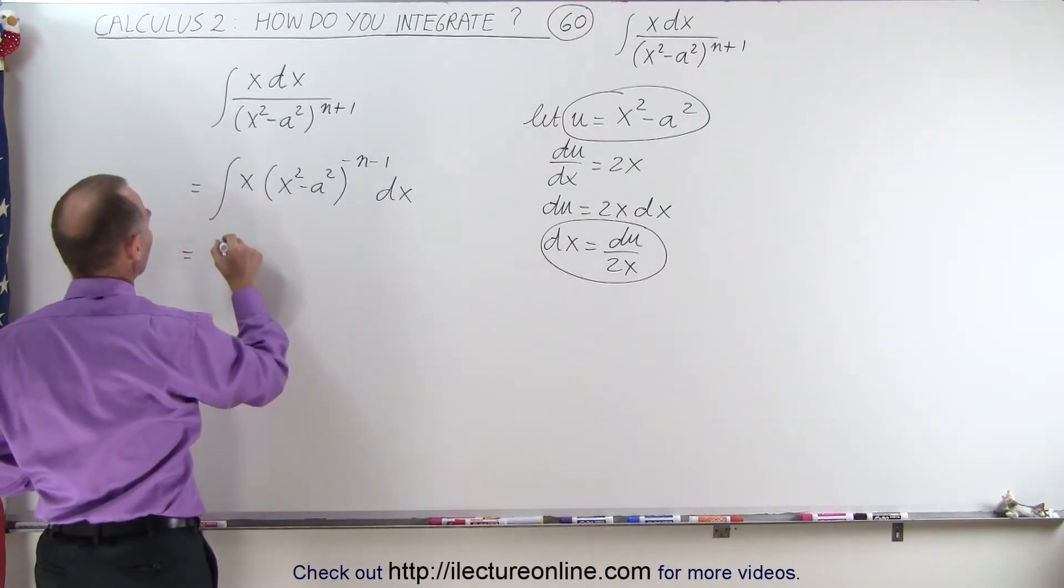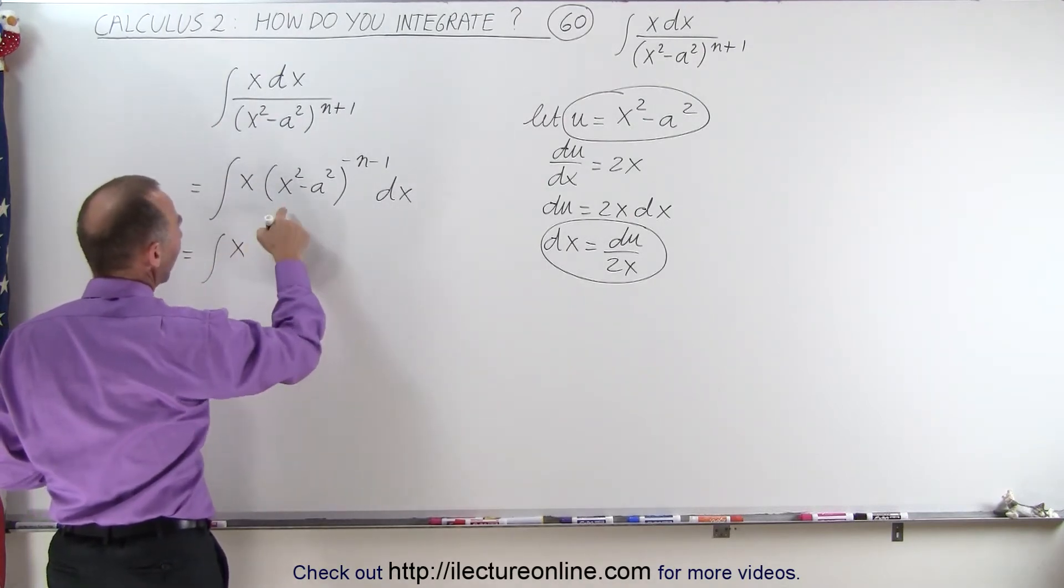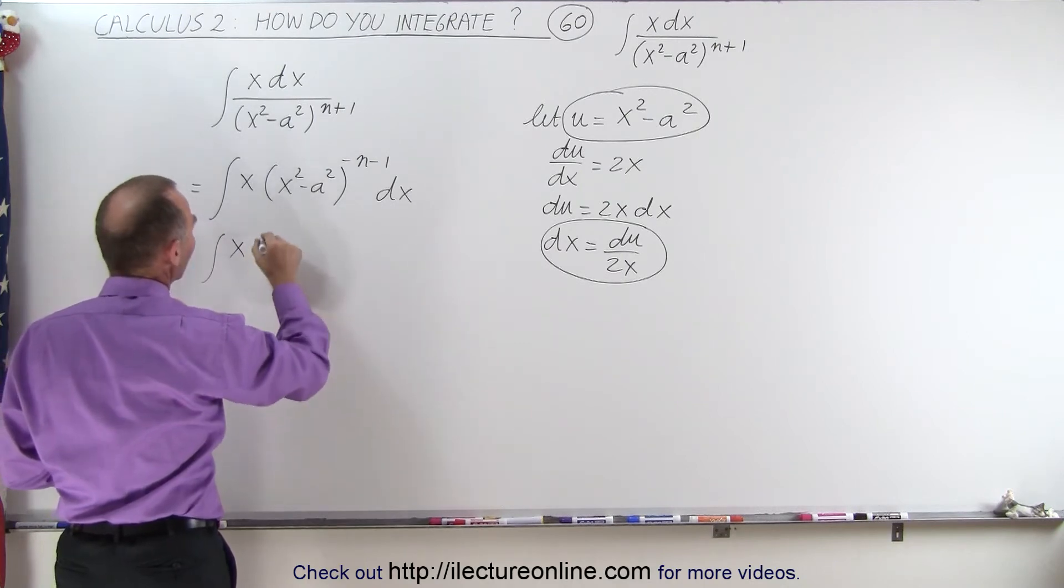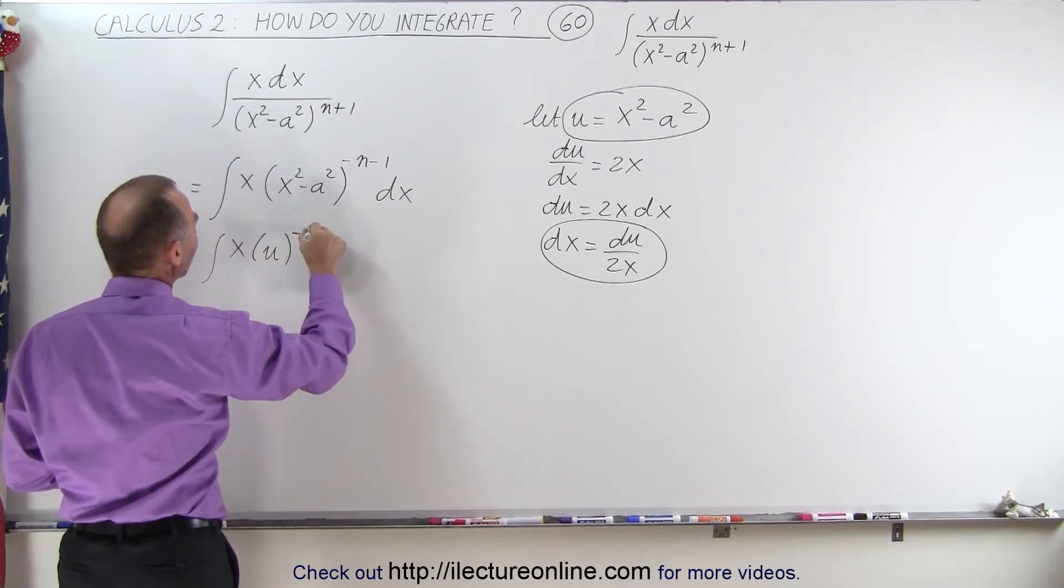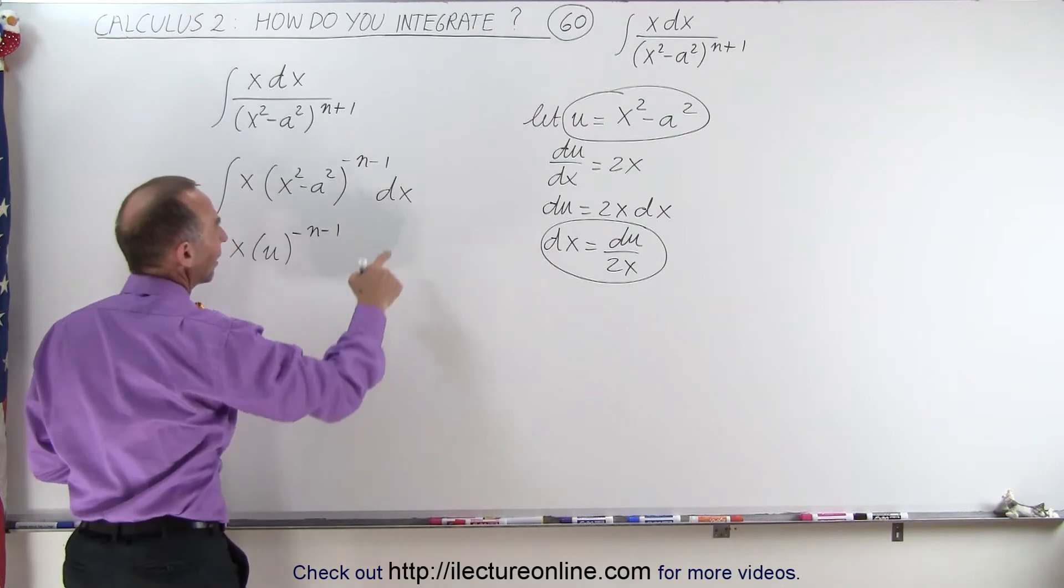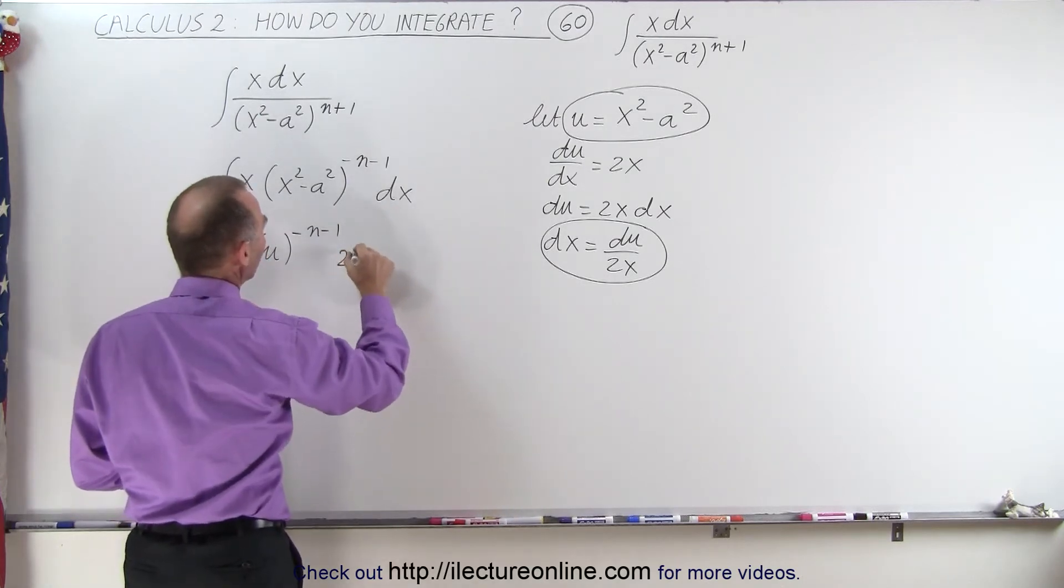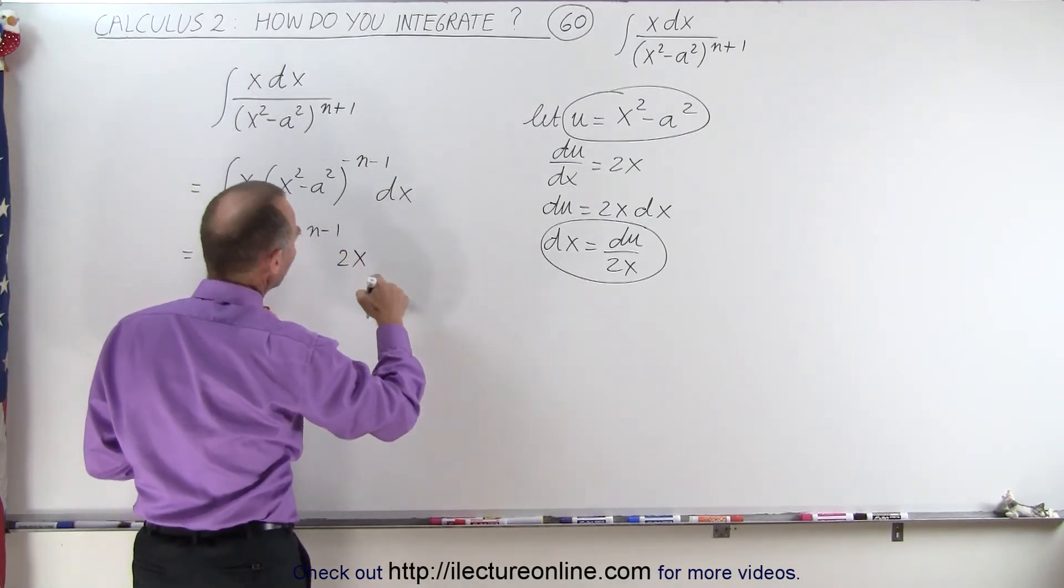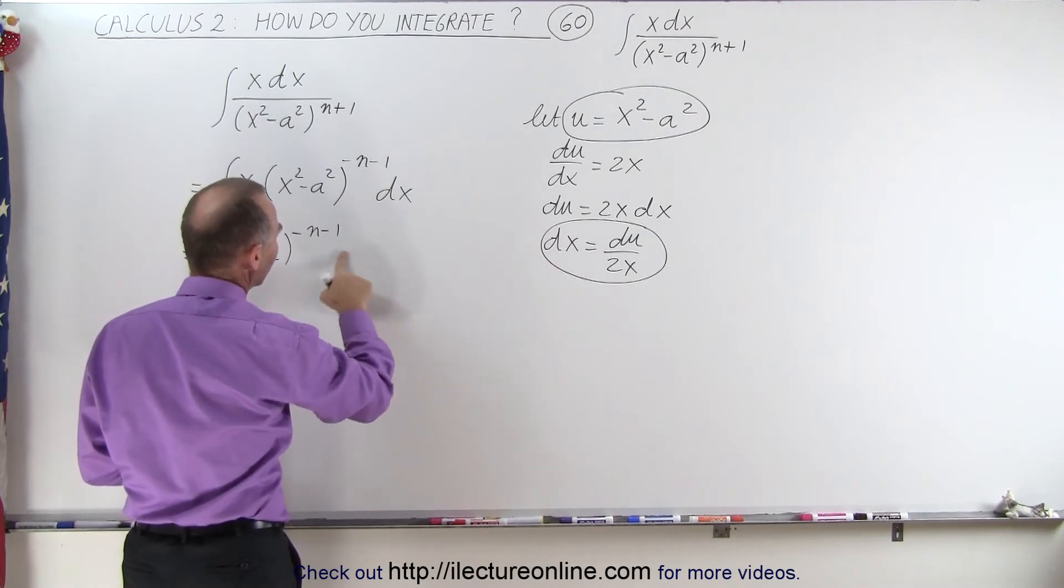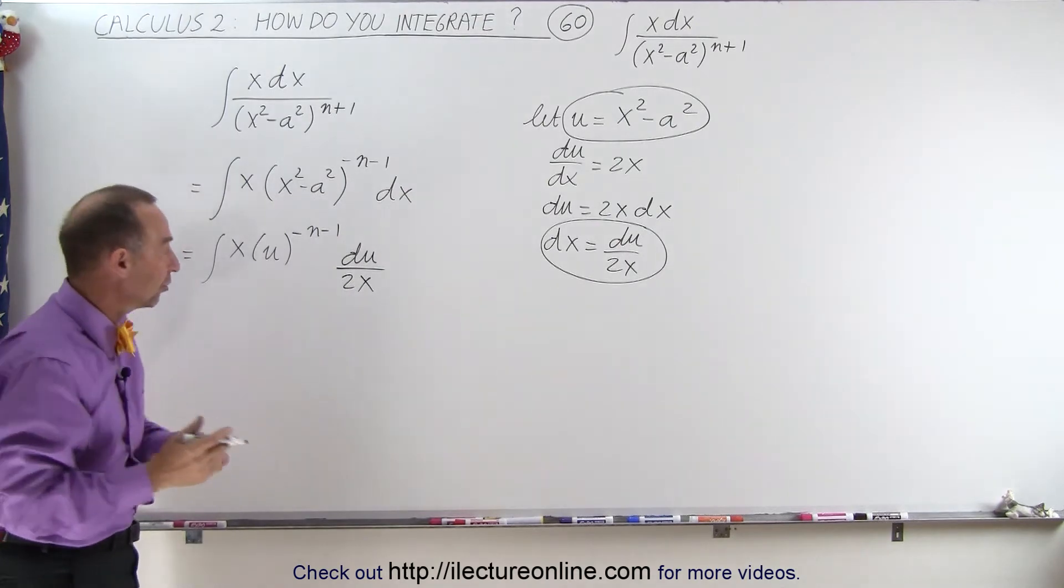So this becomes equal to the integral of x times, instead of writing this, we're going to write u to the minus n minus 1 power, and instead of dx, we're going to write du divided by 2x, and essentially we get the exact same result.